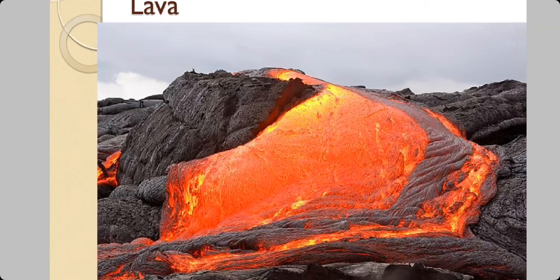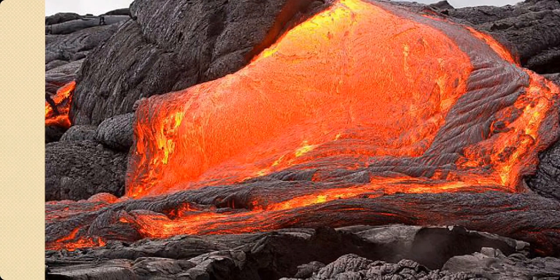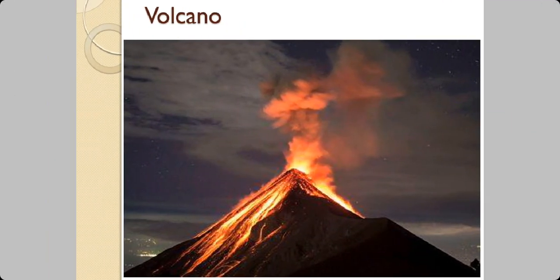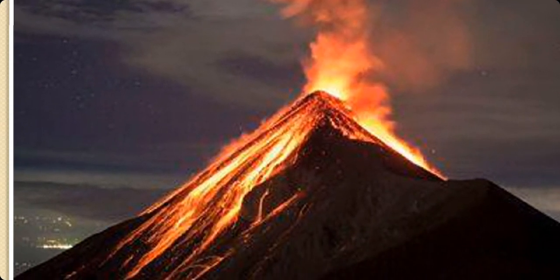This is what the lava looks like when it is flowing out of a volcano. And this is a picture of a volcano erupting. And you can see lava flowing down from the sides of the volcano.